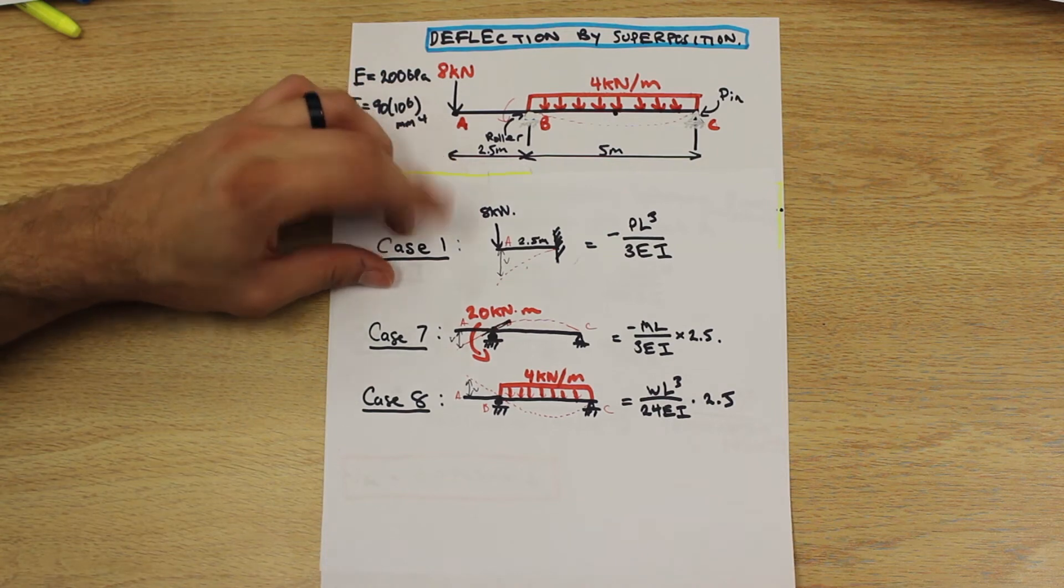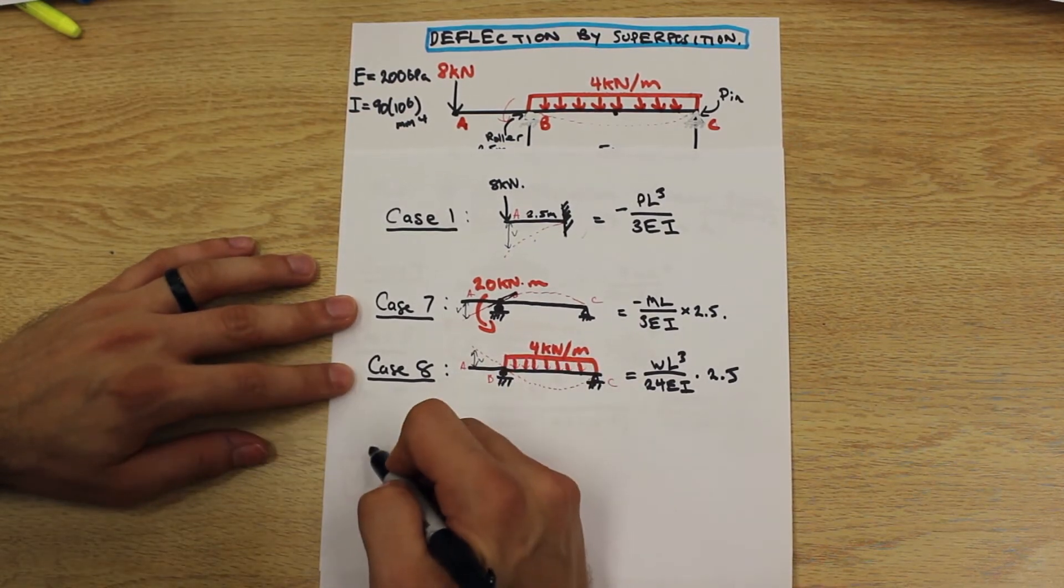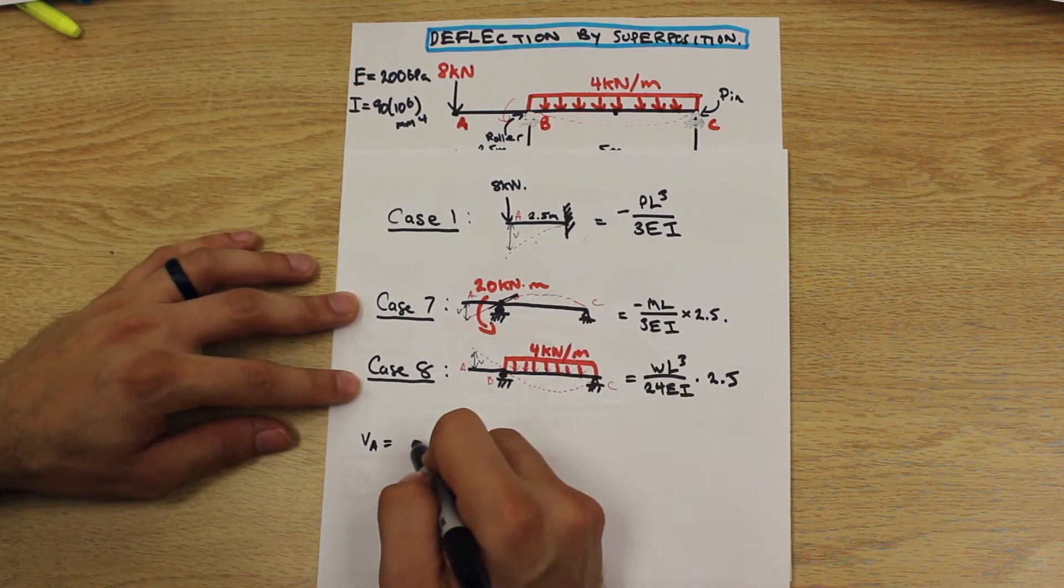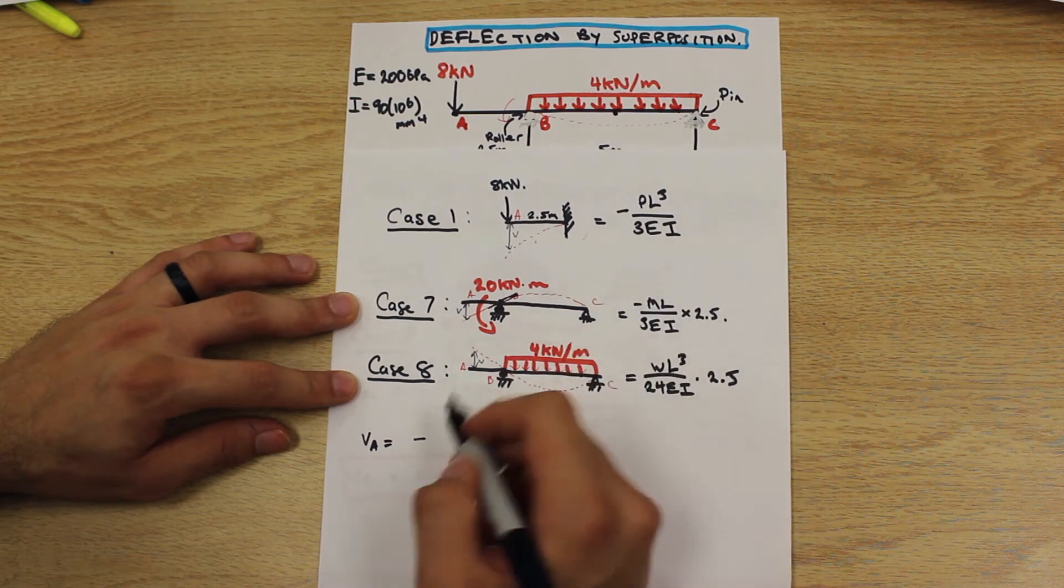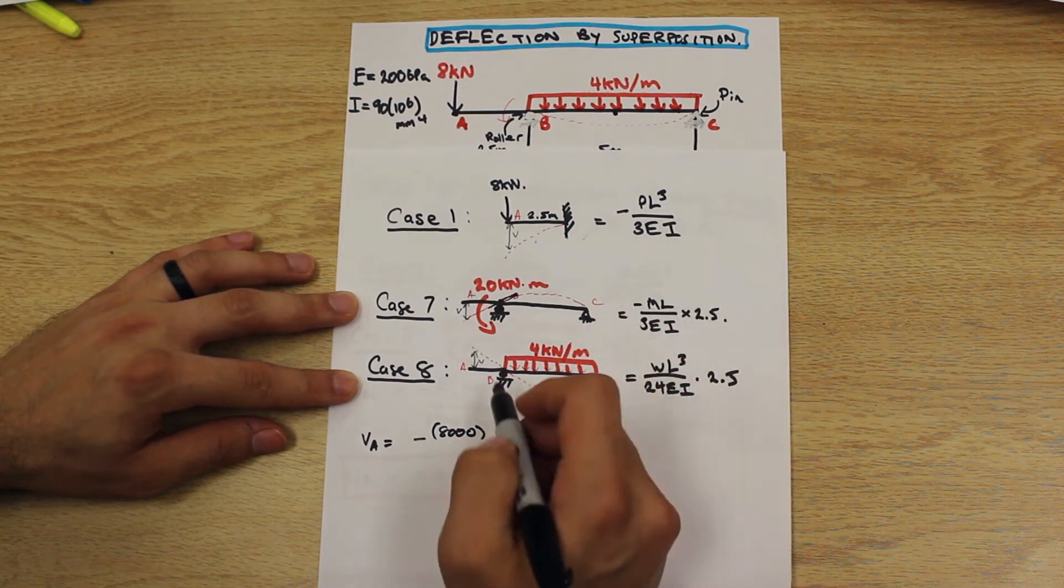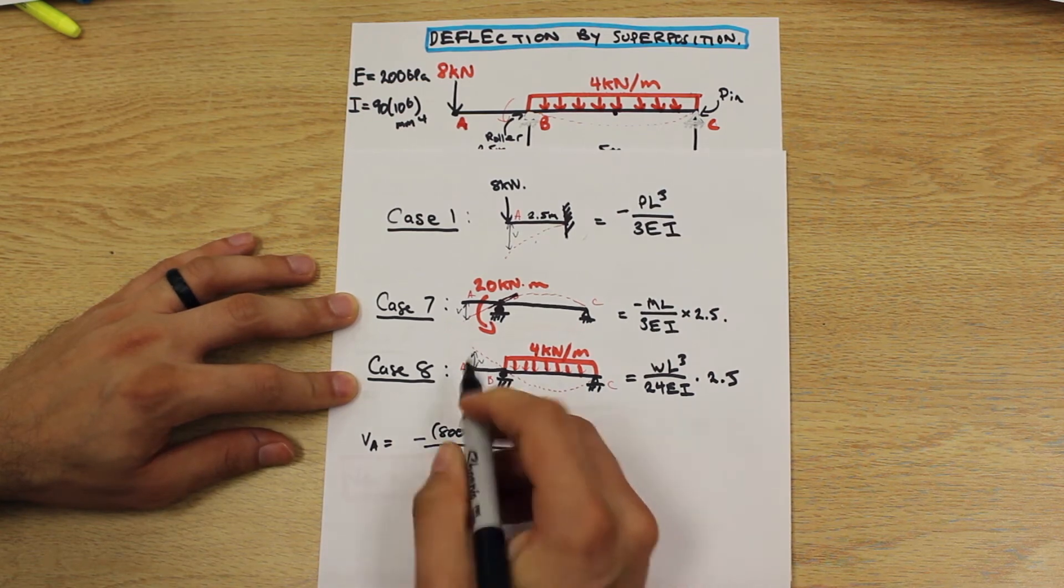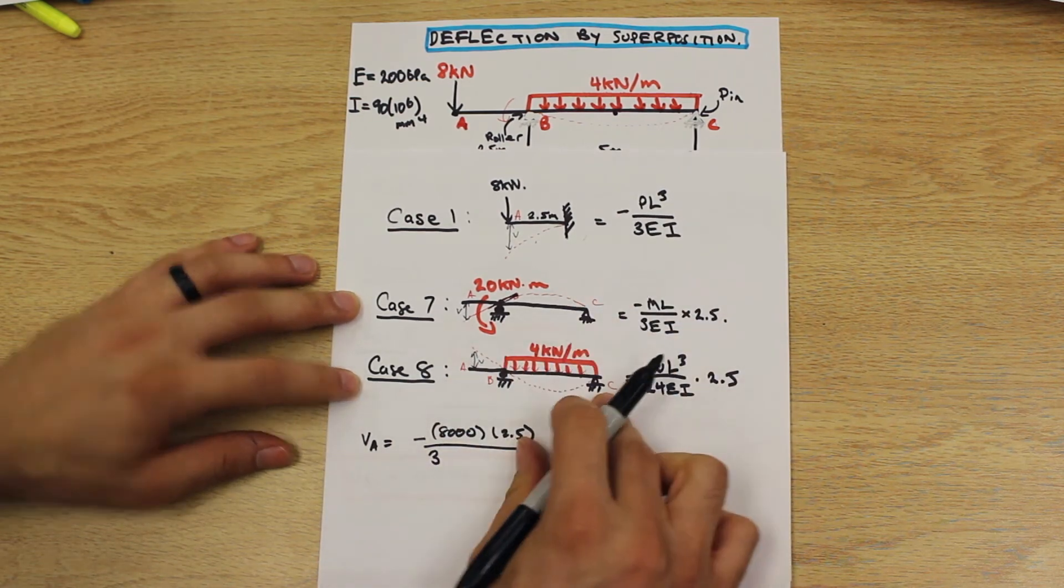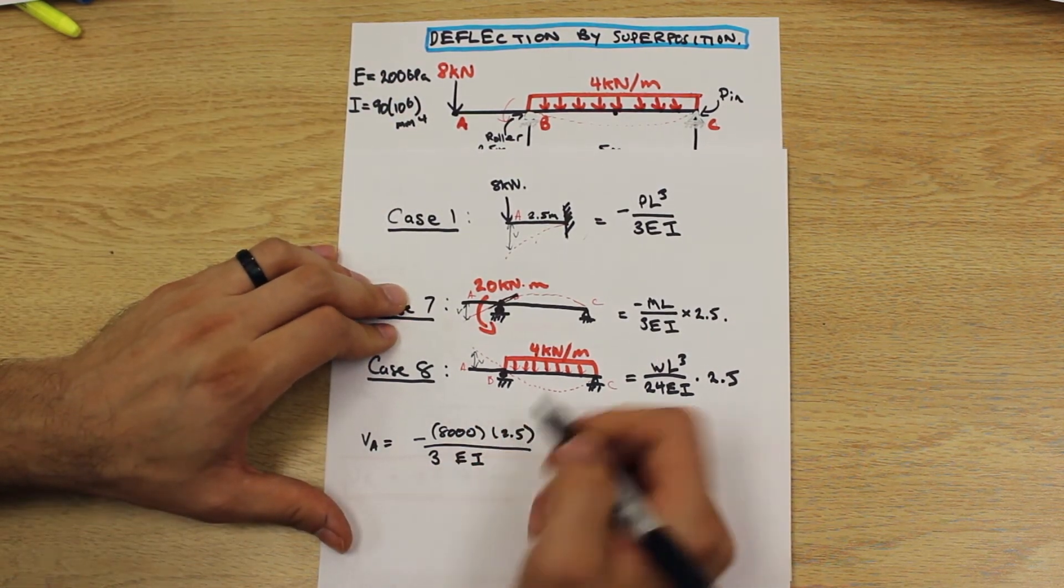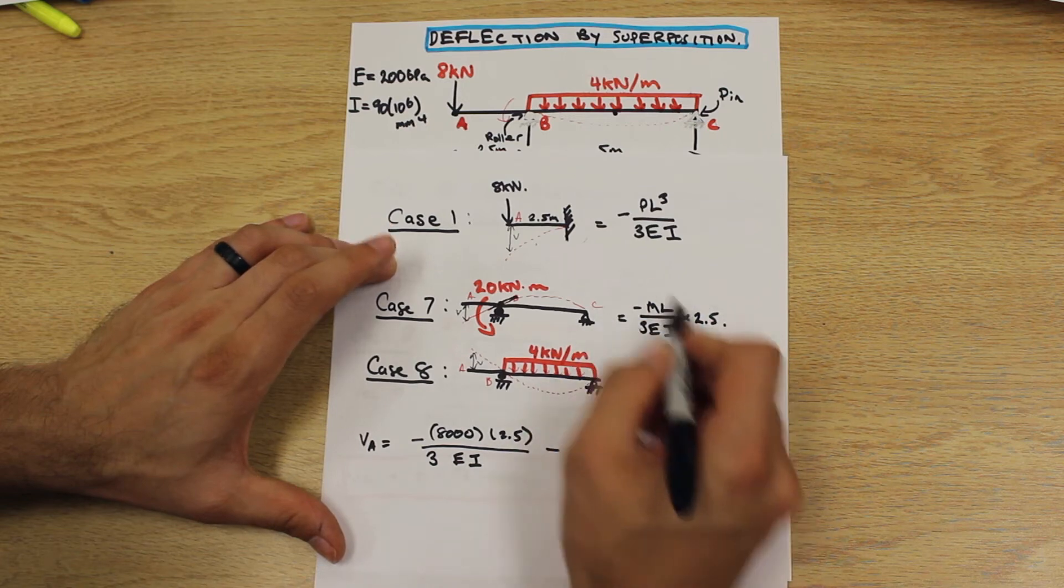Now we're just going to do the last part of this question, just plug in values. Let's begin. We have our deflection at A. V is deflection and that's going to be equal to, we're just going to do it in newtons. We have negative, so we have 8,000 newtons times the length which is 2.5, 2.5 meters, and we have 3. If you remember from the last question, EI was here. I'm just going to write EI here for you and we're going to plug that in at the end so I don't have to write it out every time.